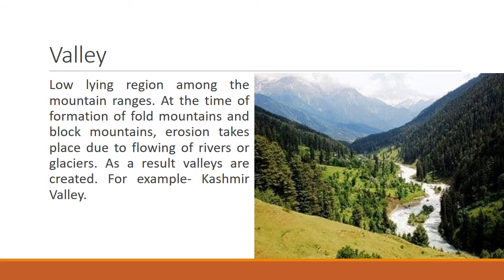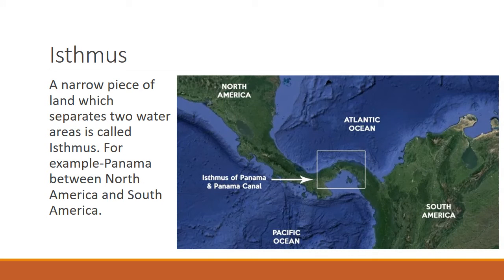Now we'll study isthmus. It is a narrow piece of land which separates two water areas. For example, Panama between North America and South America. The land separating two water areas is known as isthmus, while a sea joining two water areas is known as a strait. Do not get confused between the two. From the map, we can see that Panama separates the Atlantic Ocean and the Pacific Ocean.